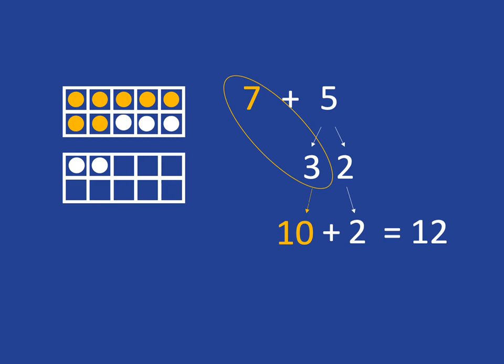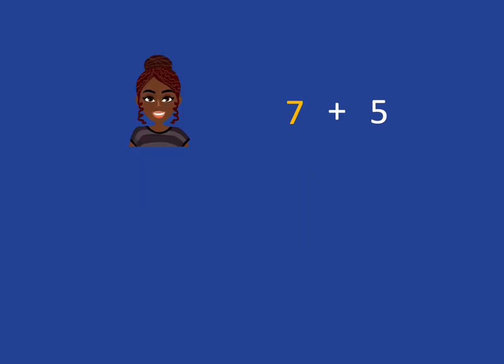I want to add 7 and 5, so I'm going to put 7 in my head. I've still got these five fingers that I need to add on. I know that 3 goes with 7 to make 10, so I'm going to take 3 of those fingers to go with the 7 in my head so that I can get 10 in my head, because what I always want is 10 in my head.